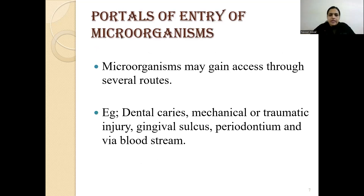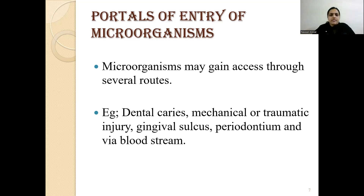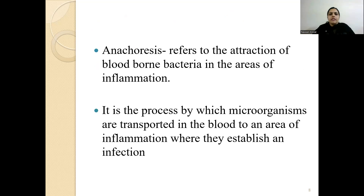There are various portals through which microorganisms can enter the root canal. These include dental caries, mechanical or traumatic injury, the gingival sulcus, the periodontium, and through the bloodstream. Another portal of entry is anachoresis — the attraction of blood-borne bacteria to areas of inflammation. It is the process by which microorganisms are transported in the blood to an area of inflammation where they establish an infection.